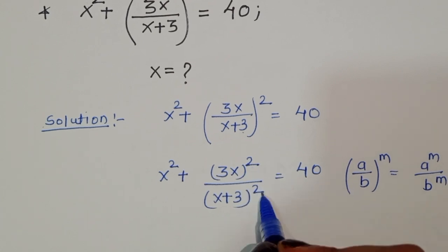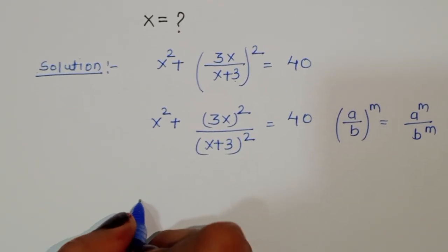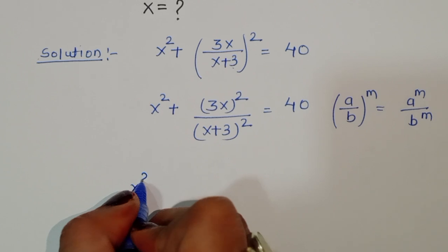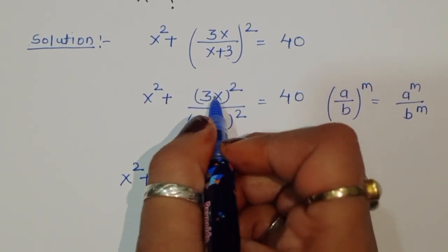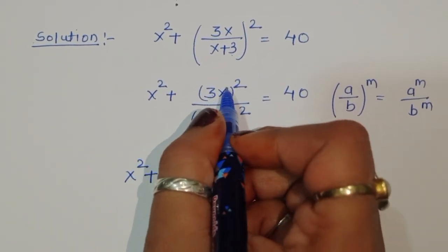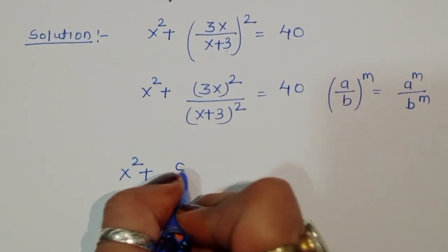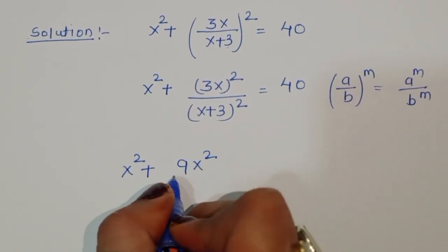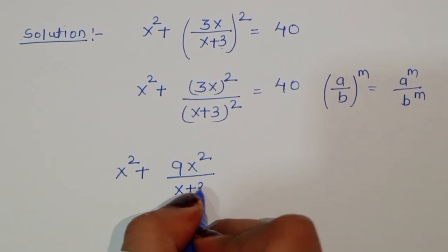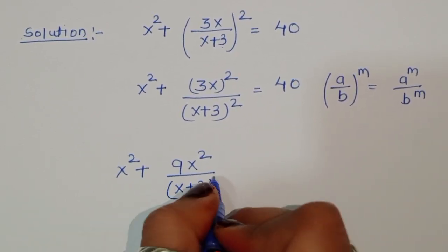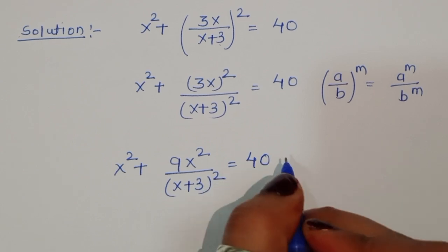So we are separating the numerator and denominator. Now x² + (3x)² means 3² is 9 and x², so we can write 9x² upon (x + 3) whole square is equal to 40.